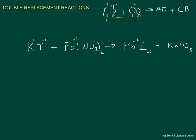I'm going to go ahead and scratch out those charges so they don't confuse us, and we'll move forward with balancing. We'll do our traditional approach — divide the plane into left and right sides. Starting with the leftmost atom, potassium: we've got one potassium on the left and one potassium on the right in KNO₃, so those are balanced. We move on to the next atom.